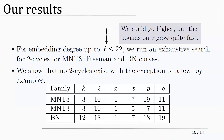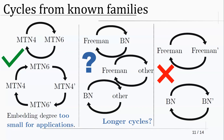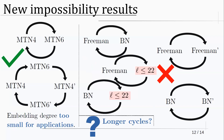We went up to degree 22 purely for computational reasons — the bounds on X grow pretty fast, making each higher degree much harder to search. We can now update the picture: there are no cycles formed by Freeman and BN curves, or Freeman and any other curve of embedding degree up to 22. The same holds for BN curves and for MNT3 curves.